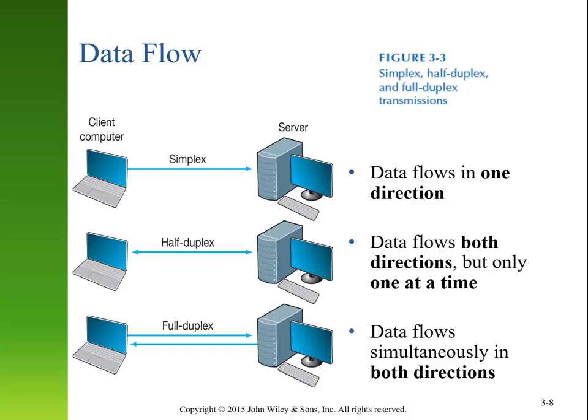Another thing we need to consider in our physical connection is how information is going to flow. Sometimes the only direction that information needs to flow is one direction. For instance, when you listen to the radio in your car, you're receiving a signal from the radio station but never broadcasting anything from your vehicle. The best way of delivering that is a simplex channel, where information is only sent one direction and 100% of your bandwidth is dedicated to that broadcast.